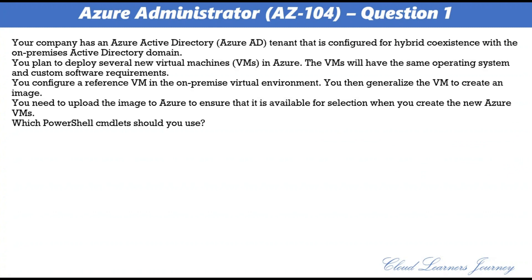Question 1. Your company has an Azure Active Directory tenant configured for hybrid coexistence with the on-premises Active Directory domain. You plan to deploy several new virtual machines in Azure. The VMs will have the same operating system and custom software requirements. You configure a reference VM in the on-premises virtual environment, then generalize the VM to create an image. You need to upload the image to Azure to ensure it is available for selection when you create the new Azure VMs. Which PowerShell cmdlet should you use?